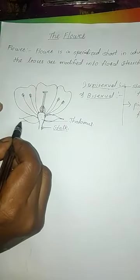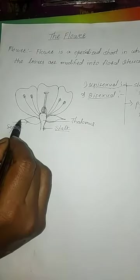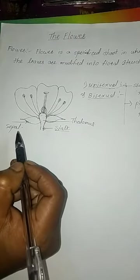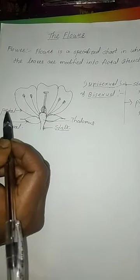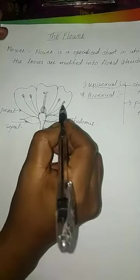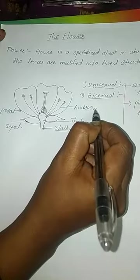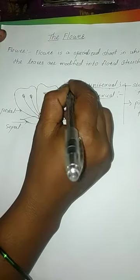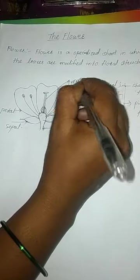The green-colored part of the flower is called the sepal. Singly it is called sepal, and collectively the sepals are called the calyx. The colorful part of the flower is called the petal. Singly it is called petal, and collectively petals are called the corolla. The female reproductive part of the flower is called the gynoecium.